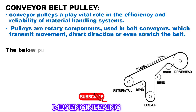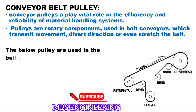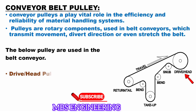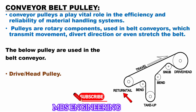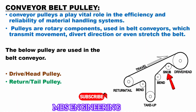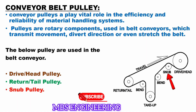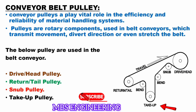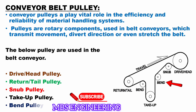The following pulleys are used in the belt conveyor: the first type is the drive or head pulley; the second type is the return or tail pulley; the third type is the snub pulley; the fourth type is the take-up pulley; and the fifth type is the bend pulley.